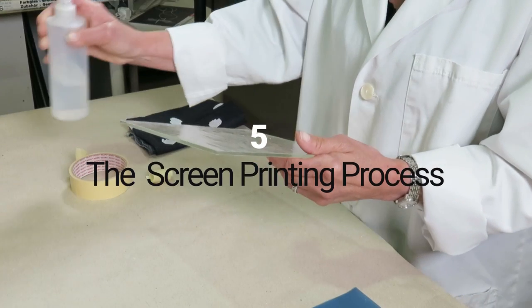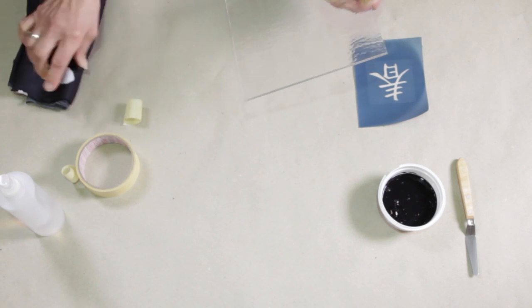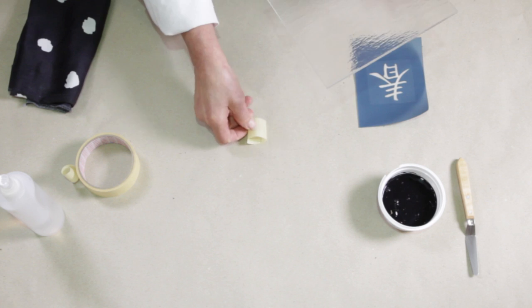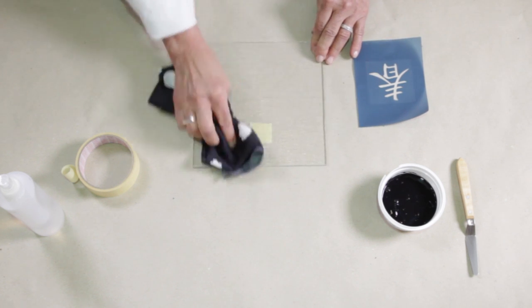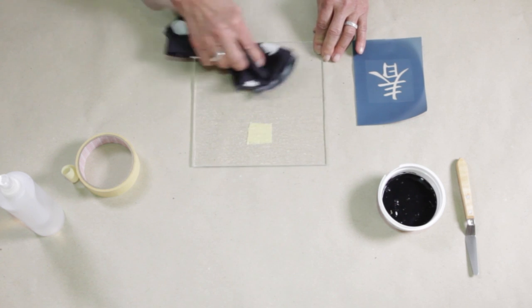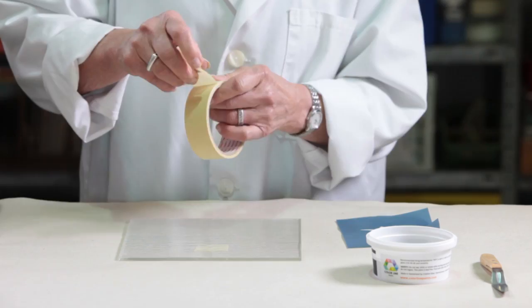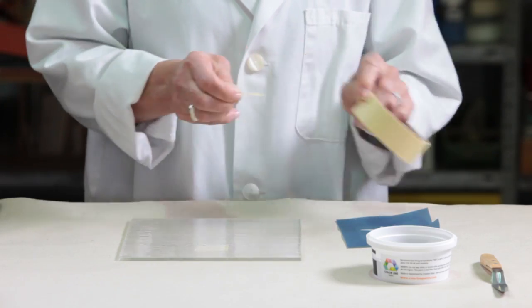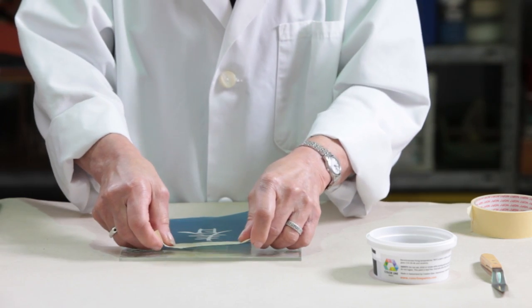Now you are ready for printing. Clean your glass with glass cleaner. Fasten it down on the table using folded or double face adhesive tape.